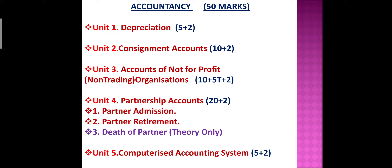Accountancy is for 50 marks, divided into 5 units. Unit number 1 is Depreciation. From this chapter, a 5 marks problem and a 2 marks question will come in the examination.